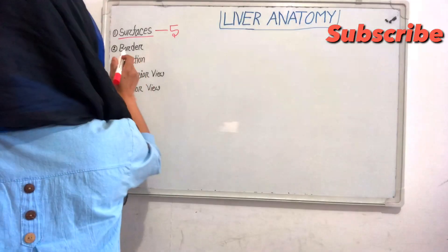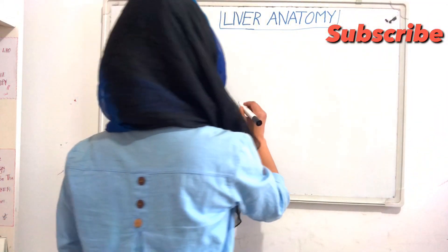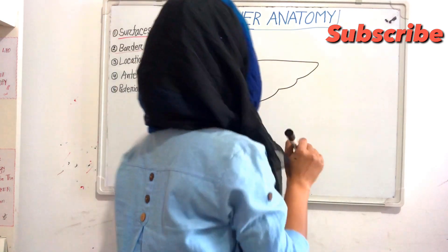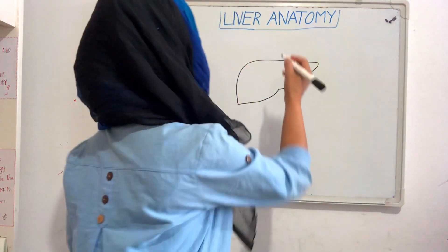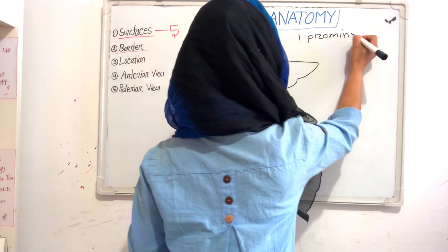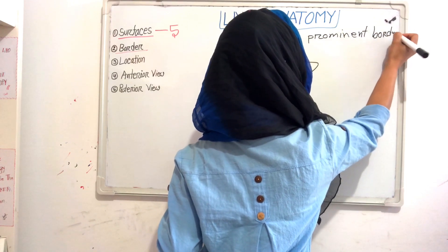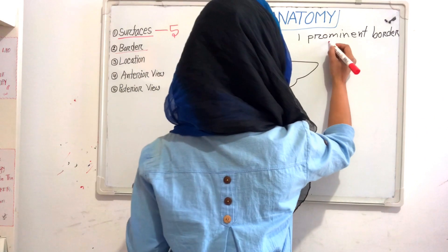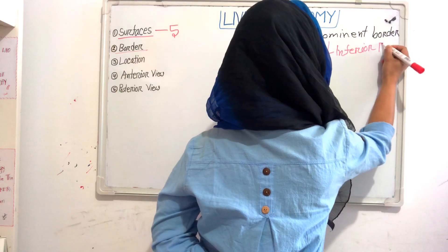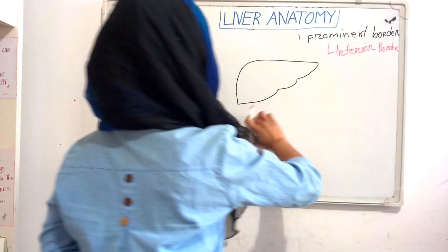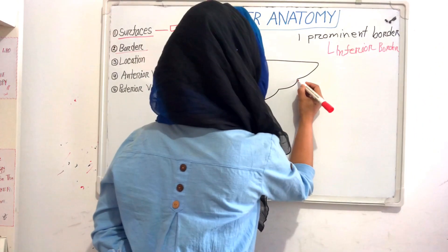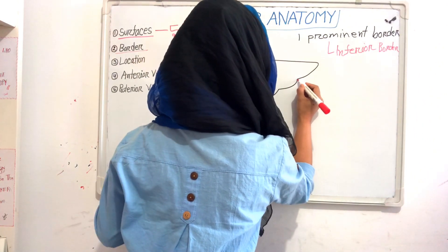Now we will see its border. Our liver has only one prominent border, and that is the inferior border. The inferior border has two notches.